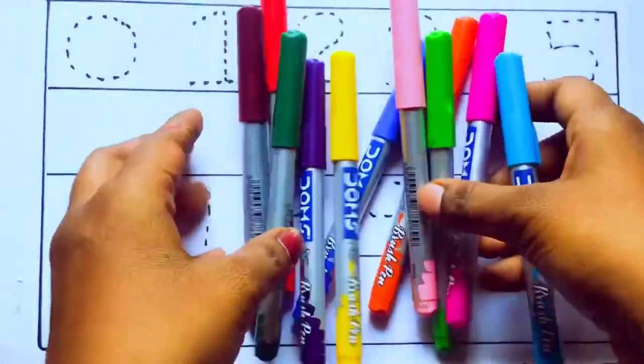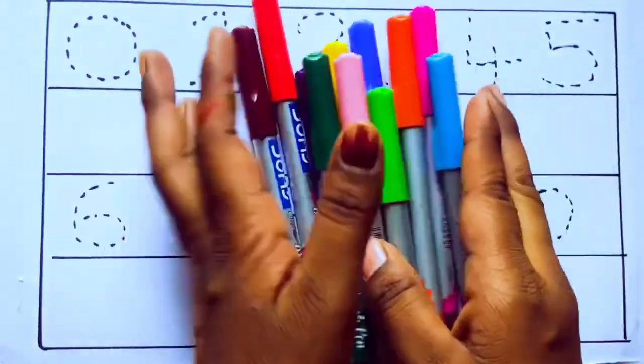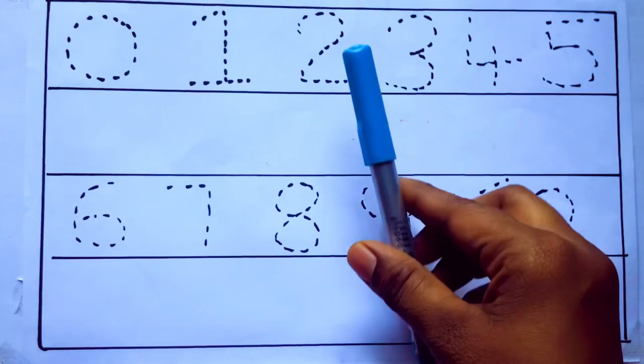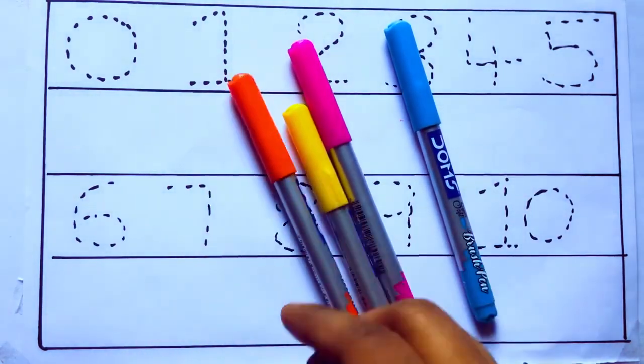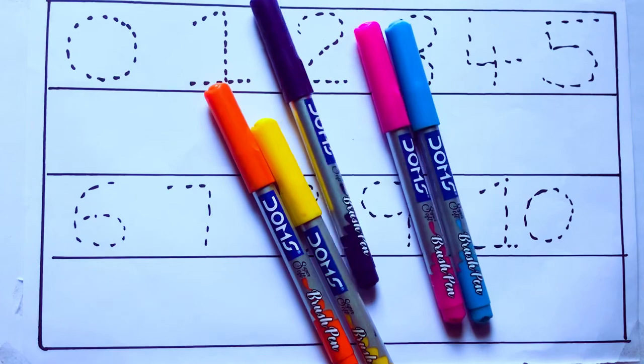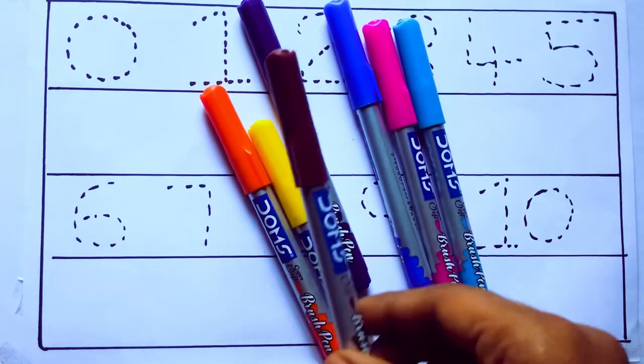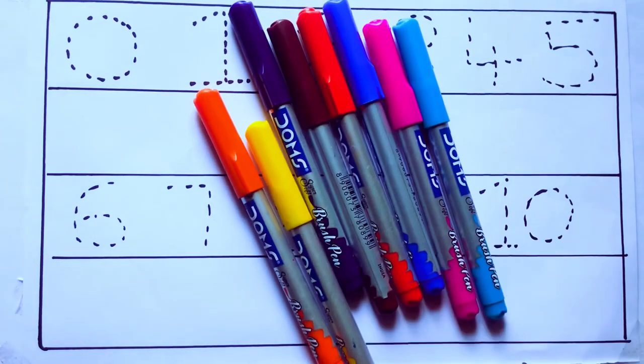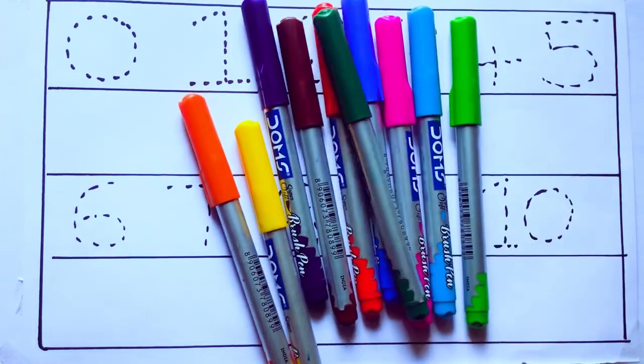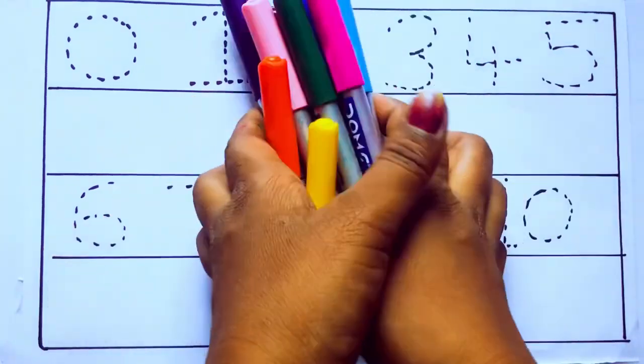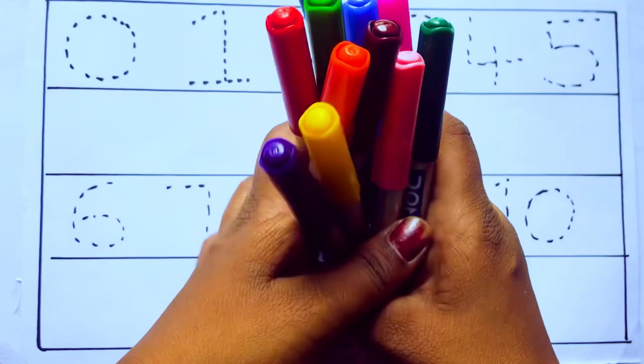Let's learn some colors. These are all the color pencils. Let's learn the names: sky blue color, pink color, yellow color, orange color, violet color, blue color, brown color, red color, green color, and pink color. Let's draw numbers.